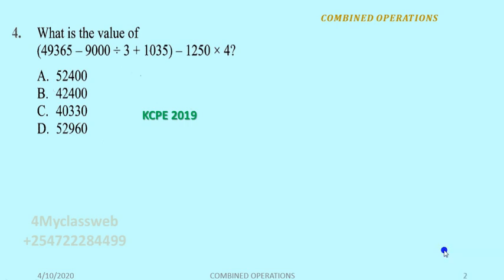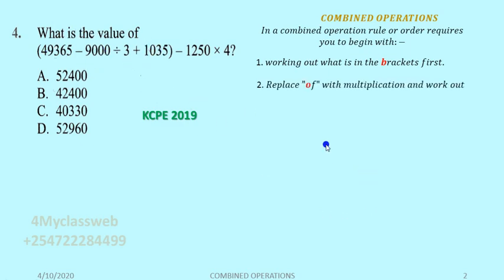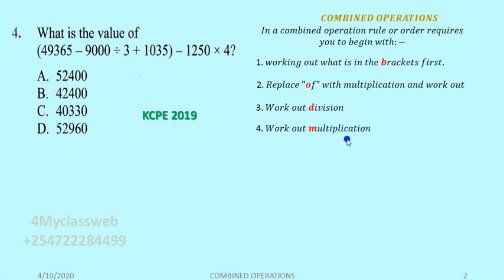In a combined operation, the rule of order requires us to begin as follows: you start by working out what is inside the bracket first. Then, if there is 'of', you replace 'of' with multiplication. After that, you deal with division, then multiplication, then addition, and finally subtraction.